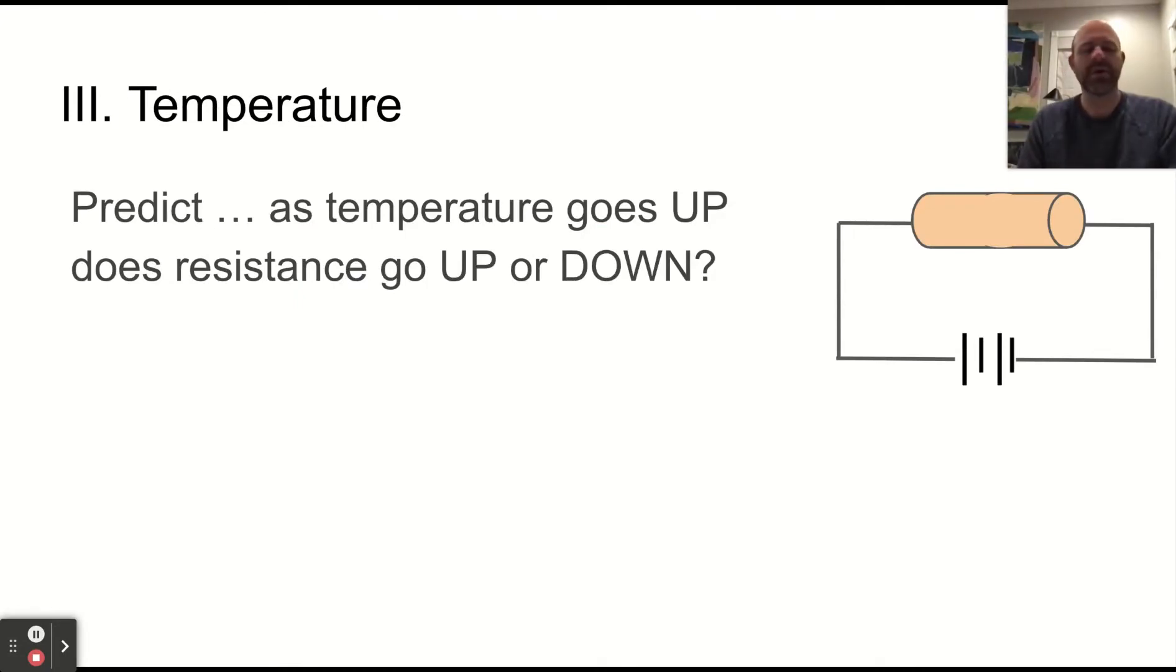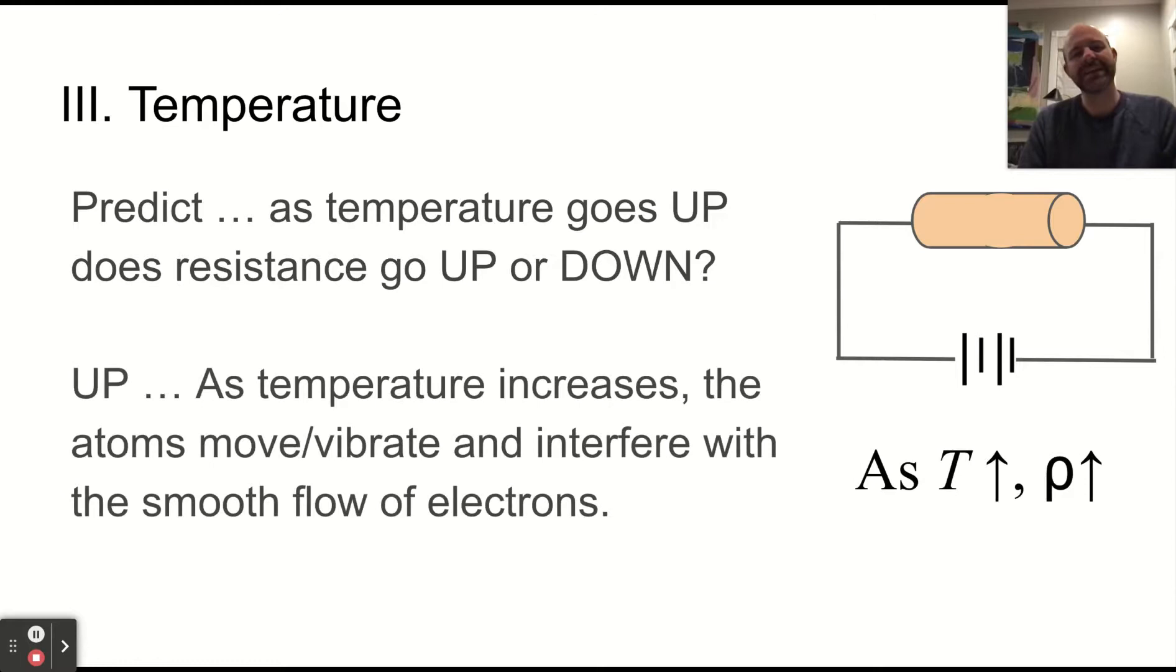You could ask yourself, would resistance go up or down with temperature? And that's sort of a question of, are things able to allow flow of electrons through better when they're cold or hot? As it turns out, as it gets hot, there's more vibrations in the lattice. And so it makes it hard for the electrons to flow. So that resistivity increases.